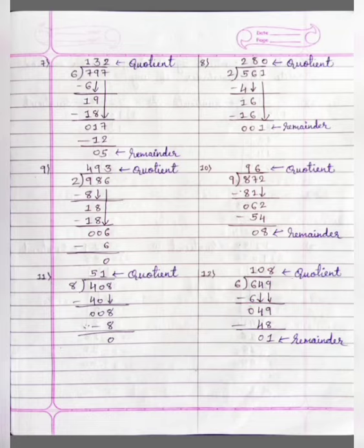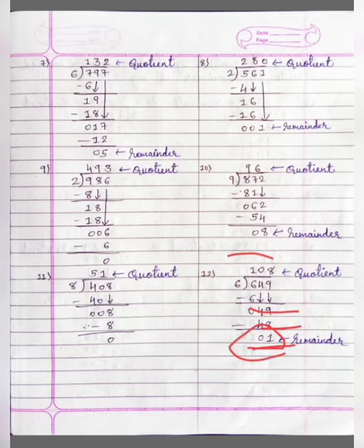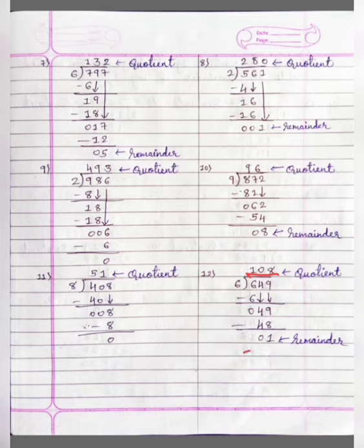Now 6 eights are 48. 49 minus 48 is equal to 1. So this is our remainder and this is our quotient. Our quotient is 108 and remainder is 1.